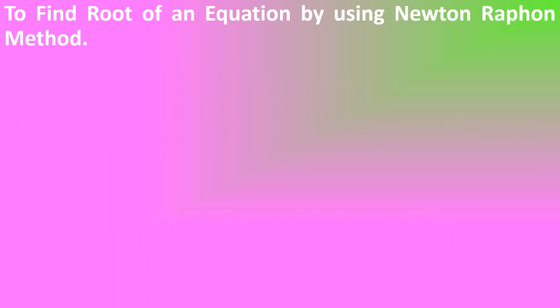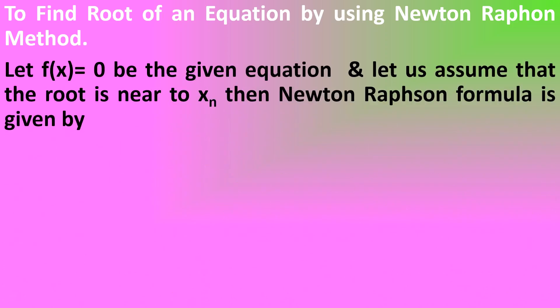To find the root of an equation by using the Newton-Raphson method: let f(x) = 0 be a given equation and let us assume the root is near to xn, which will be given in the question. If it has not been given, you need to find the nearest value by substituting values of x as 0, 1, 2 or -1, -2, -3, and so on. Substitute each x value into f(x) and find which gives f(x) nearly equivalent to 0. Consider that as the initial guess — that will be the xn value.